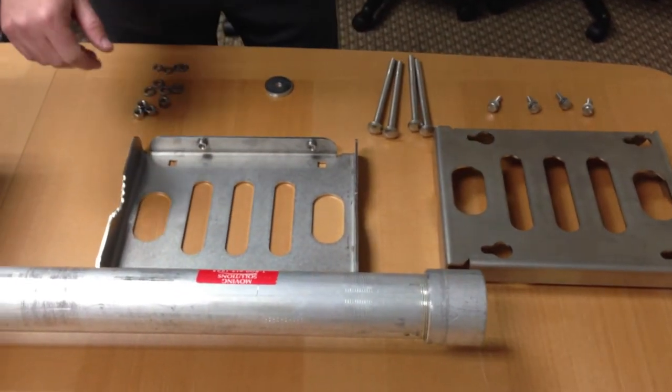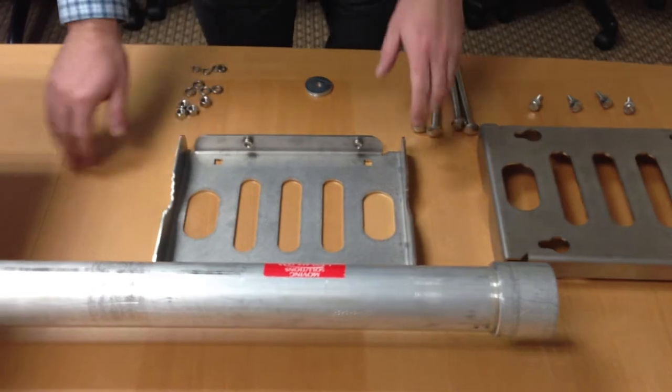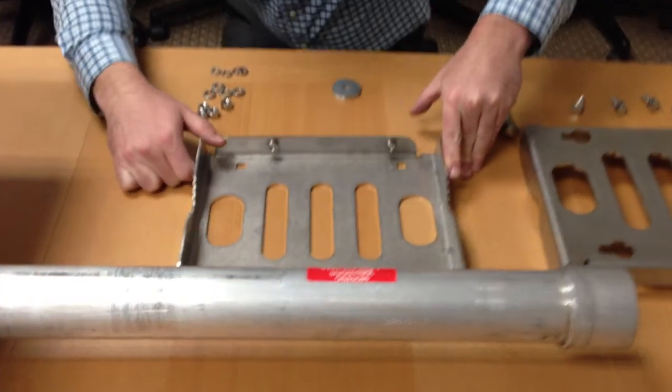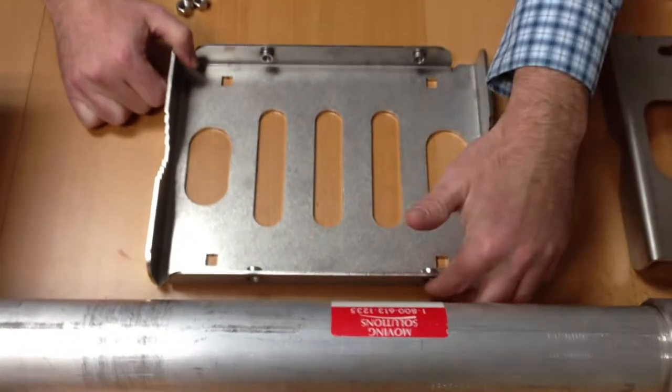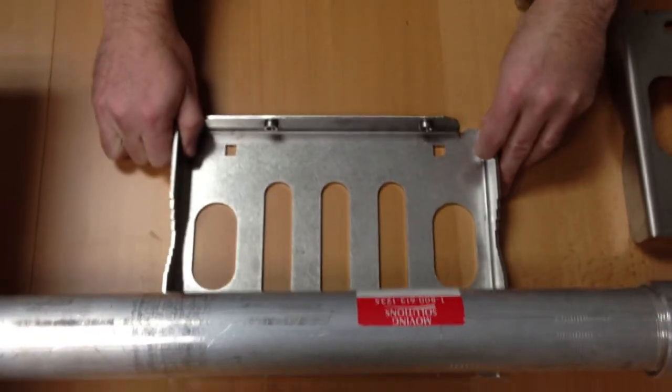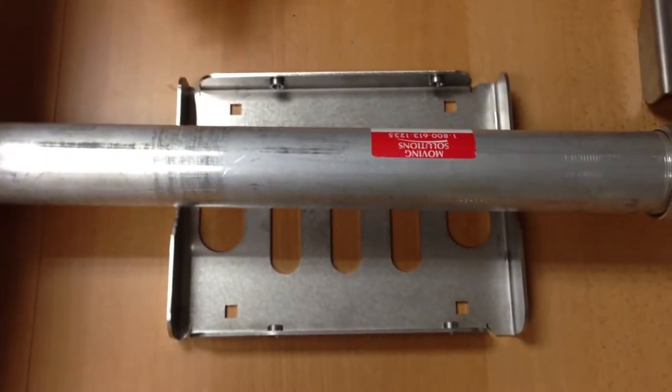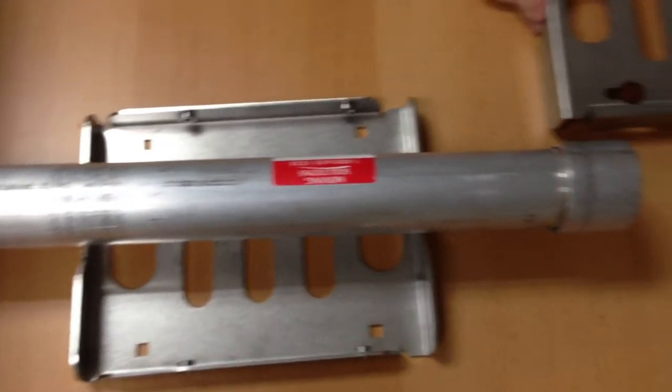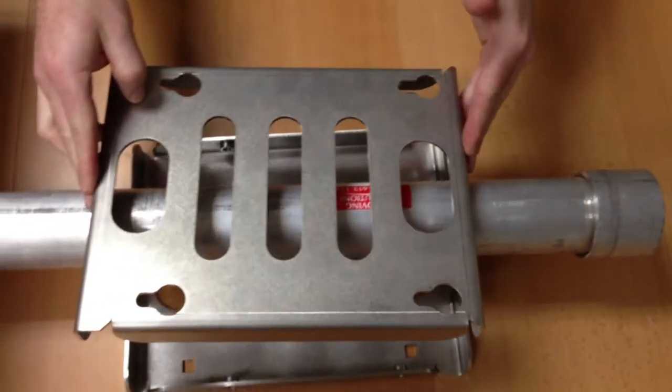So the first thing I'm going to do is I'm going to slide this mounting plate that has the four holes on the side, the four threaded holes. I'm going to bring that down underneath the pipe here, and then I'm going to bring this other piece over the top of the pipe.